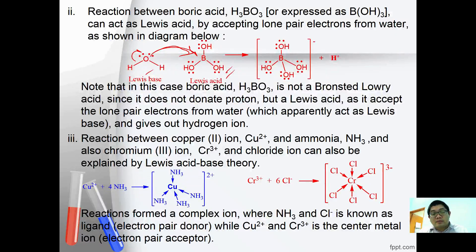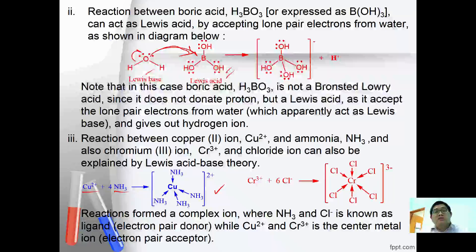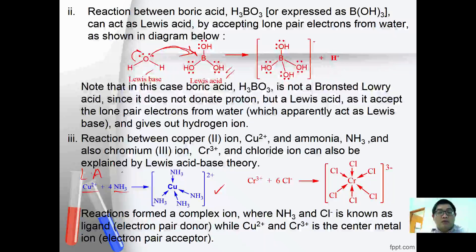The reaction between copper(II) ion and ammonia: when copper accepts the lone pair electrons from ammonia, it forms a complex called tetraamine copper(II) ion. This formation of a complex is also described as an acid-base reaction. Copper(II) ion acts as a Lewis acid, which is a lone pair electron acceptor, while ammonia acts as a Lewis base, a lone pair electron donor. The same applies to chromium: it acts as a Lewis acid, and the ligand acts as a Lewis base.